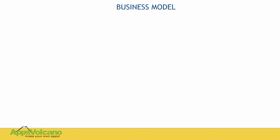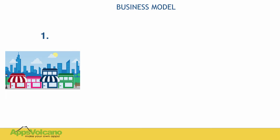Now a few words about how the business model which I would like to talk about today works. The first step would be setting up and registering your business if you haven't done this yet. Your main services would be making mobile apps, mobile websites or digital magazines. You can provide all of those services using appsvolcano.com.